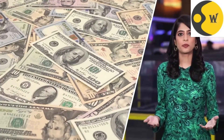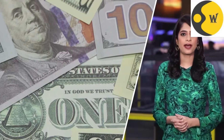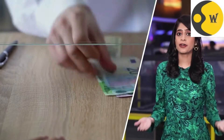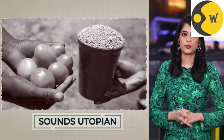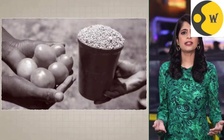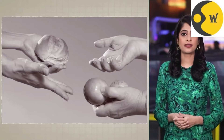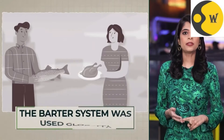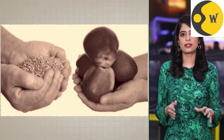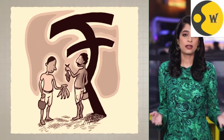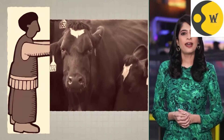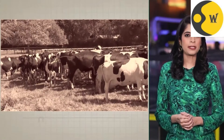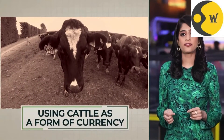Wouldn't life be less complicated if we used the same currency worldwide? No need for forex for travel. Today this thought sounds utopian. But hundreds of years ago there was no currency, no bank notes — people would use the barter system globally. They would trade a good or service for another. For example, you could buy a basket of mangoes in exchange for a sack of rice. Around 9,000 BC, people were using cattle as a form of currency.